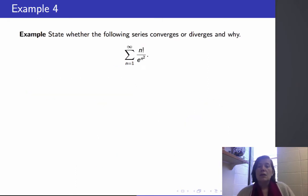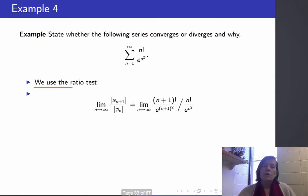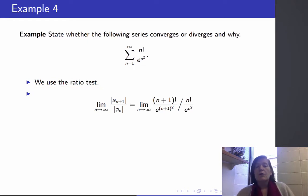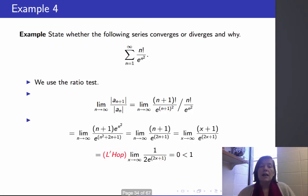Here's another series — e is a constant, it has powers of a constant and factorials, so the ratio test is probably a good test to use here. We calculate the limit as n goes to infinity of |a_{n+1} / a_n|, which is the limit of (n+1)! / e^{(n+1)²} divided by n! / e^{n²}. With these factorials and powers of a constant, we can expect a large amount of cancellation.